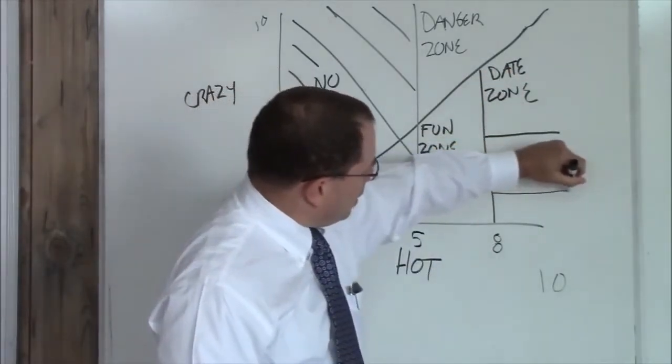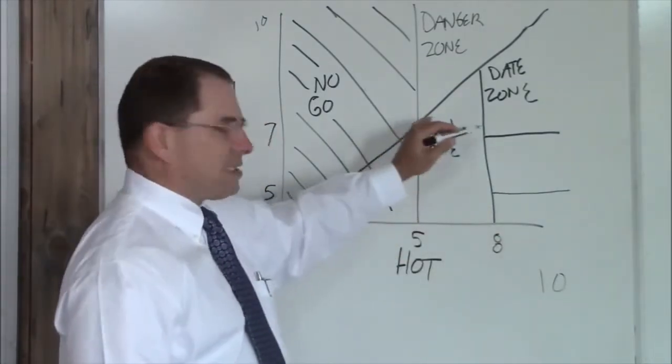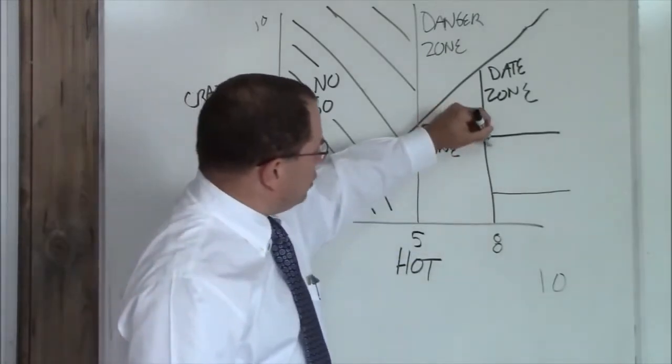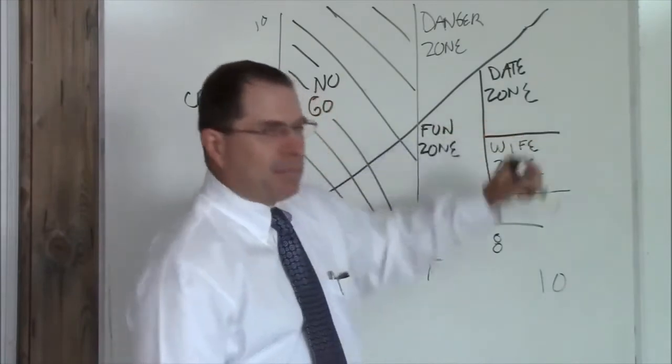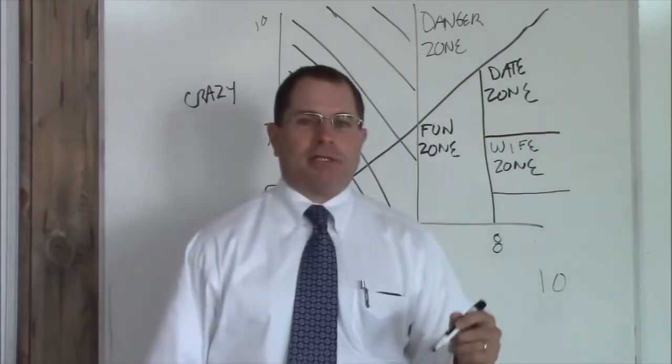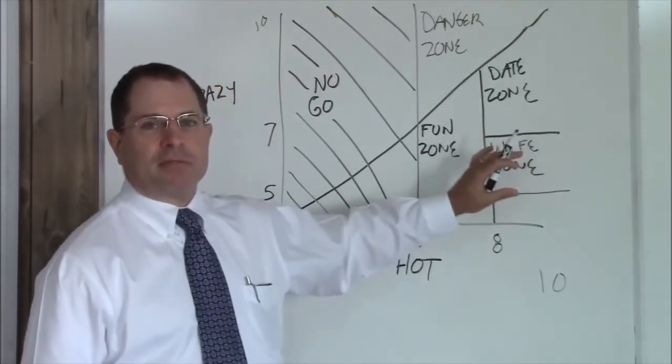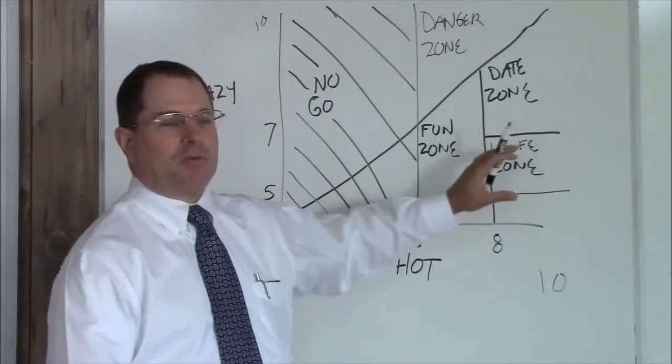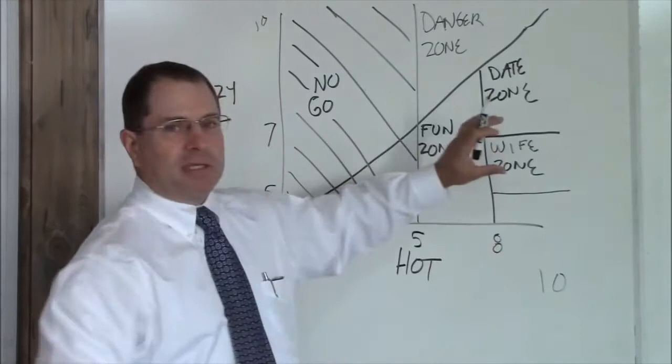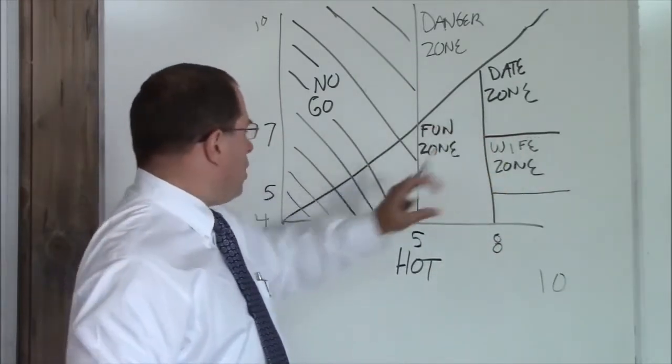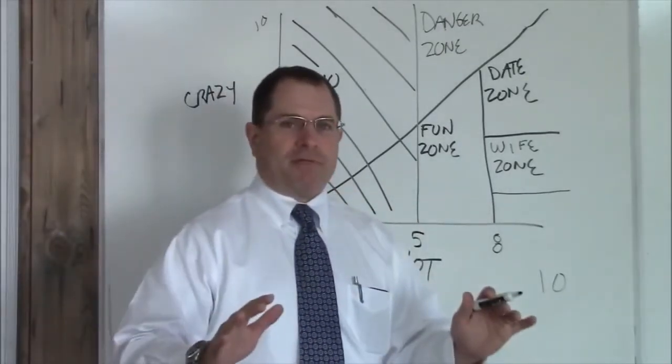Above an eight hot, and between about a seven and a five crazy, this is your wife zone. When you meet this girl, you should consider a long-term relationship. This zone is not scaled to size. This is a representation and not an actual pie chart showing you how many of these people are out there. This is simply a representation of what you're after. You want to be five to seven crazy, above an eight hot. That's your wife zone.